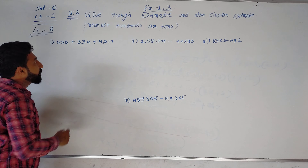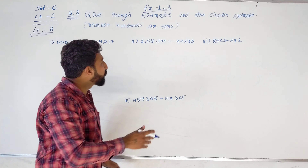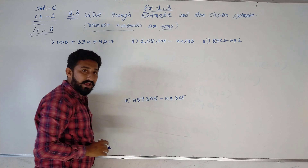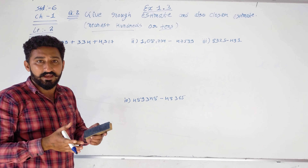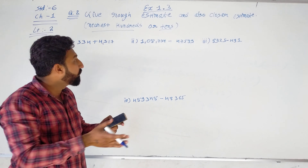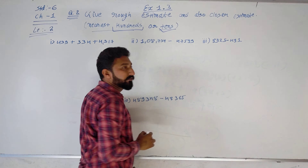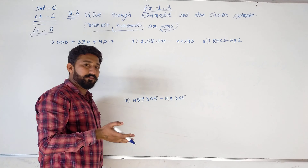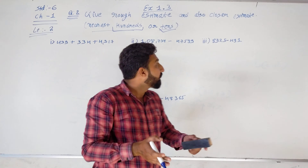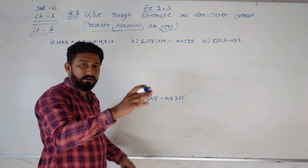Question 2 is: give the rough estimate and also the closer estimate to the nearest 100 or 10s. The nearest value is the value which is the nearest to the given number, whether to the nearest 100 or 10s.